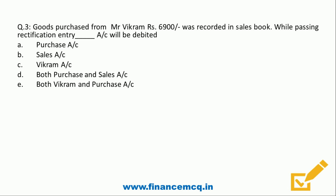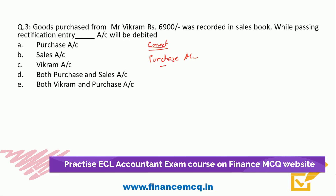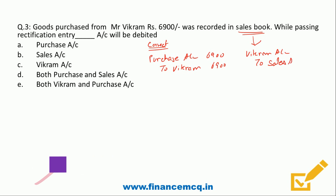The correct entry should have been: Purchase Account Dr. 6,900 / To Vikram 6,900. But what was actually recorded in the sales book is: Vikram Account Dr. / To Sales Account. So this is the wrong entry that was passed.